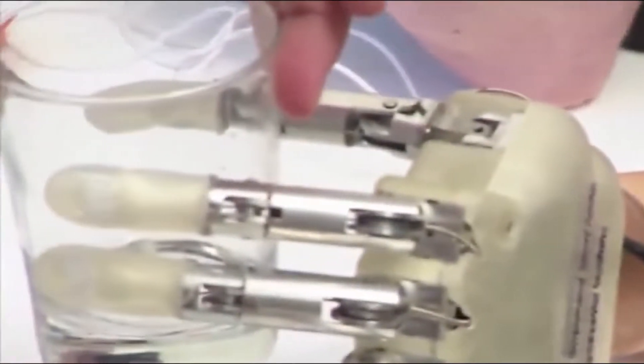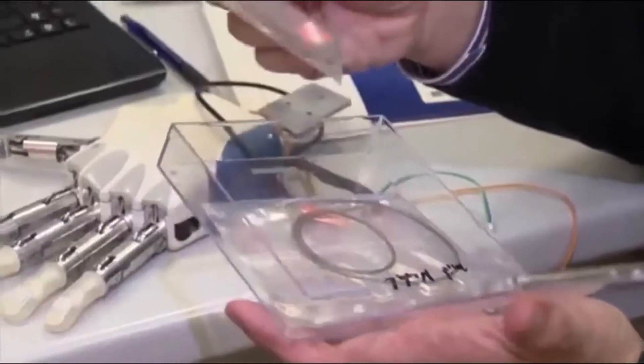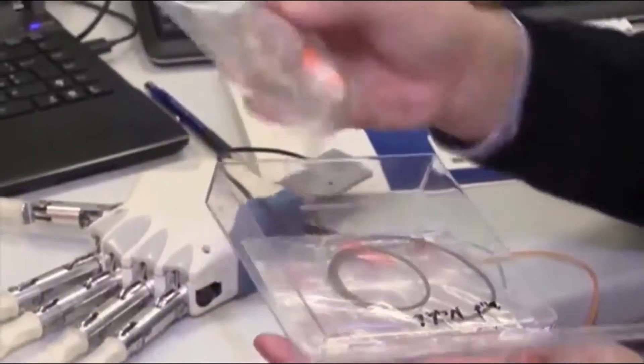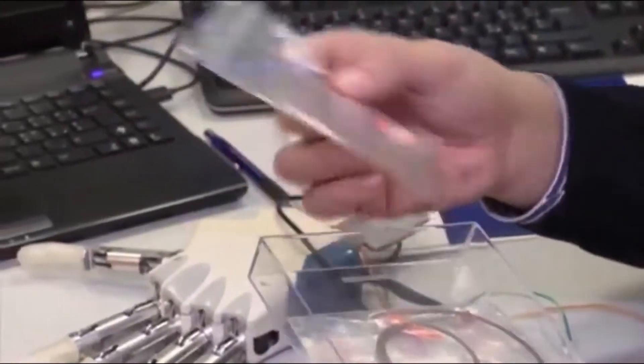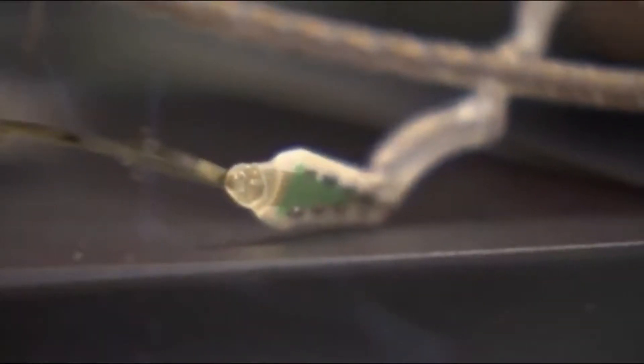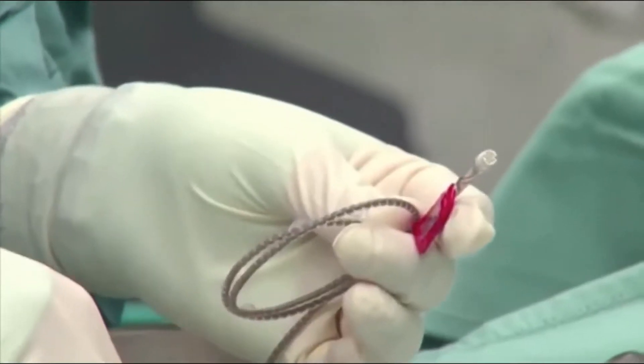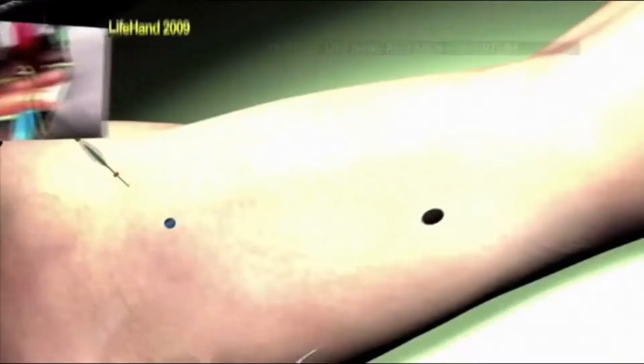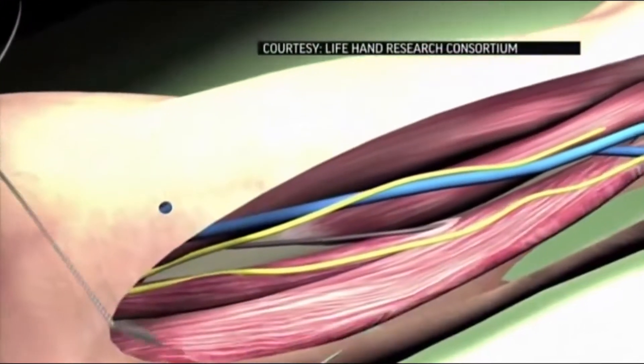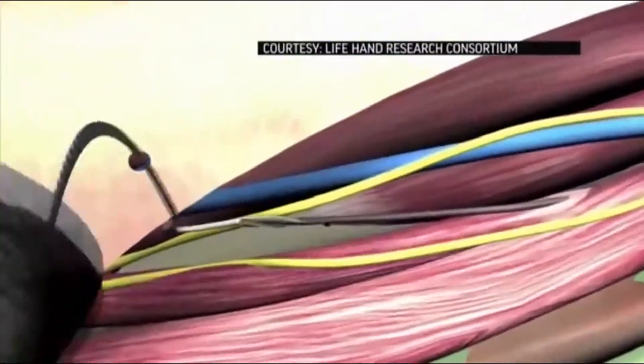We take a skin for granted, but it's a complex sensing, signaling and decision-making system, said Zhenan Bao, a professor of chemical engineering and one of the senior authors. This artificial sensory nerve system is a step toward making skin-like sensory neural networks for all sorts of applications.